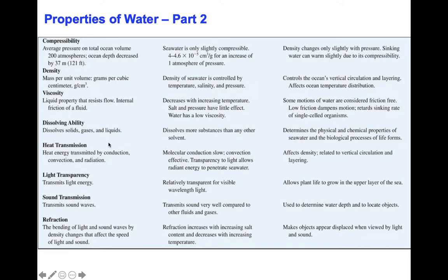Water is also very unique in that it transmits heat energy by conduction, convection, and radiation. Solar radiation heats up the equatorial ocean waters, and water gets cooled via conduction from the top in polar regions. This is very important and affects the density of seawater and sets up vertical circulation patterns in the ocean water. Light transparency is also very important — ocean water transmits light energy particularly in the top 100–150 meters, which we call the photic zone.